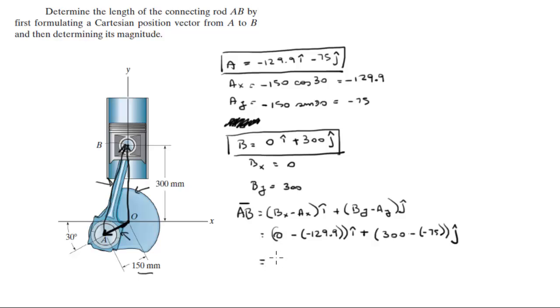This is going to be equal to 129.9, negative times negative is positive, plus 375. So this is I, and this is J.